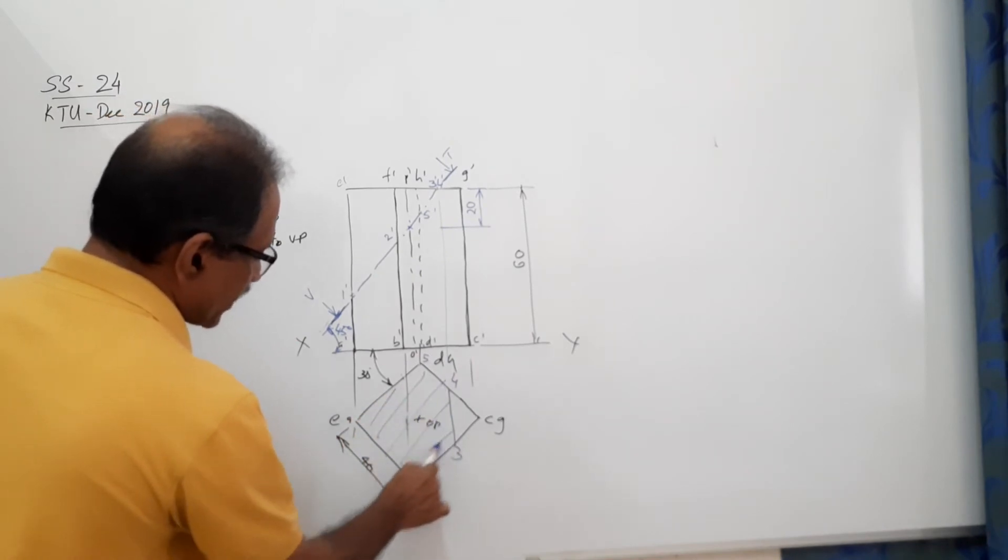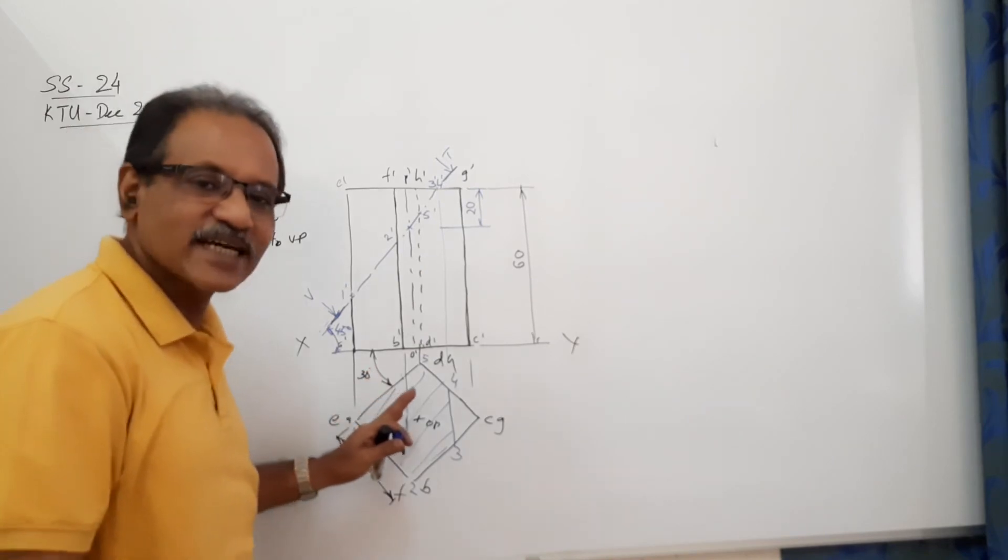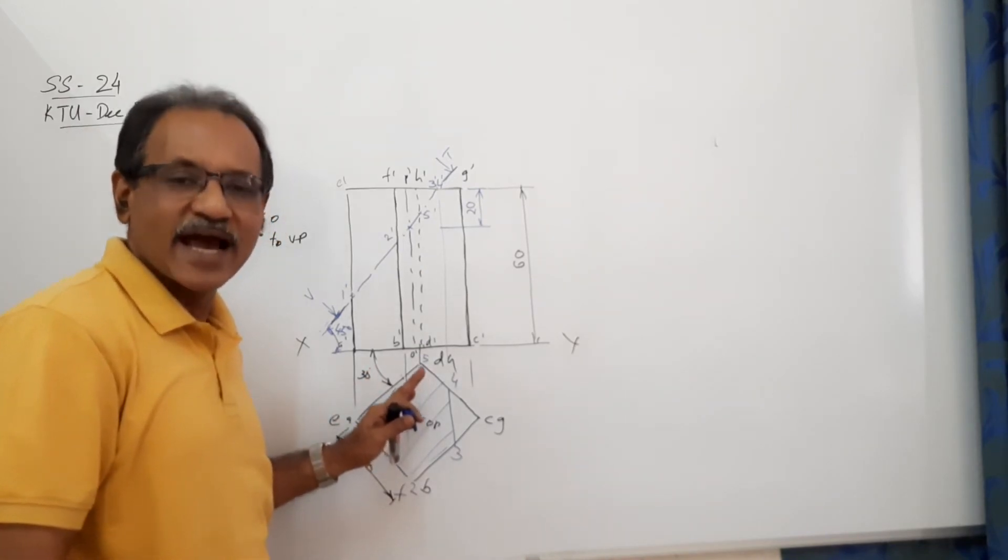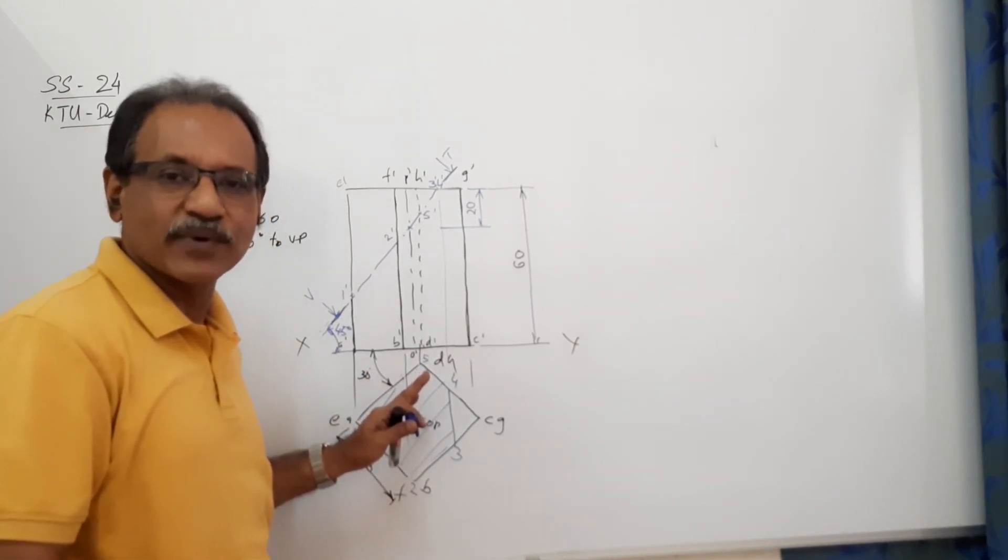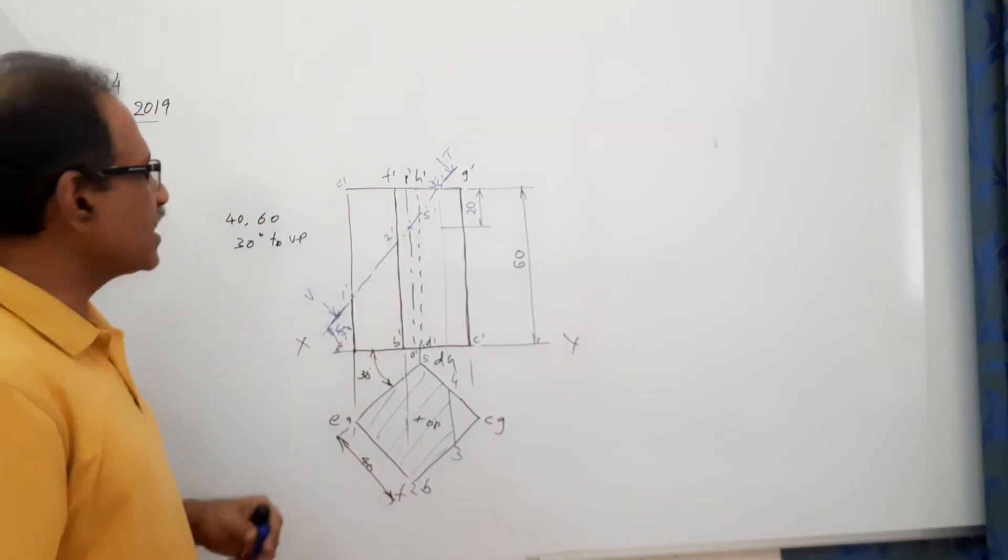To the left of the cutting plane, the hatching lines are drawn at 45 degrees to the XY line and 1.5 to 2 millimeters apart. You have completed the sectional plan and the sectional elevation. What is remaining? You have to draw the true shape.